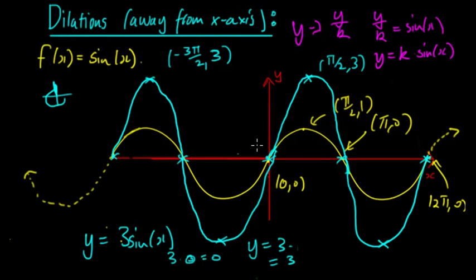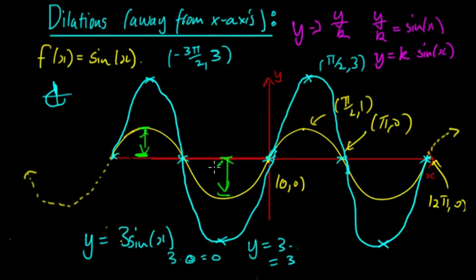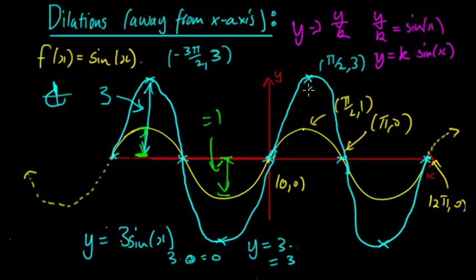This means the graph's amplitude or magnitude has changed. Before, the amplitude was equal to 1. But now the amplitude is equal to 3. So whatever you dilate by — whatever k is equal to — that will become the new amplitude.